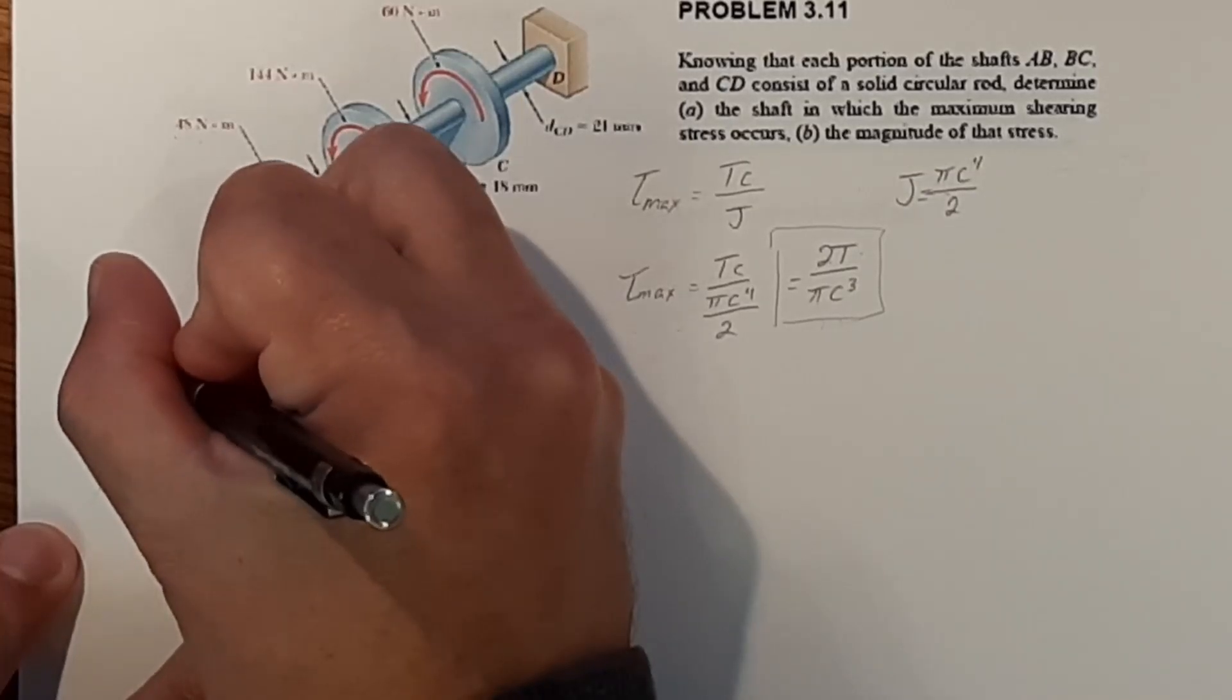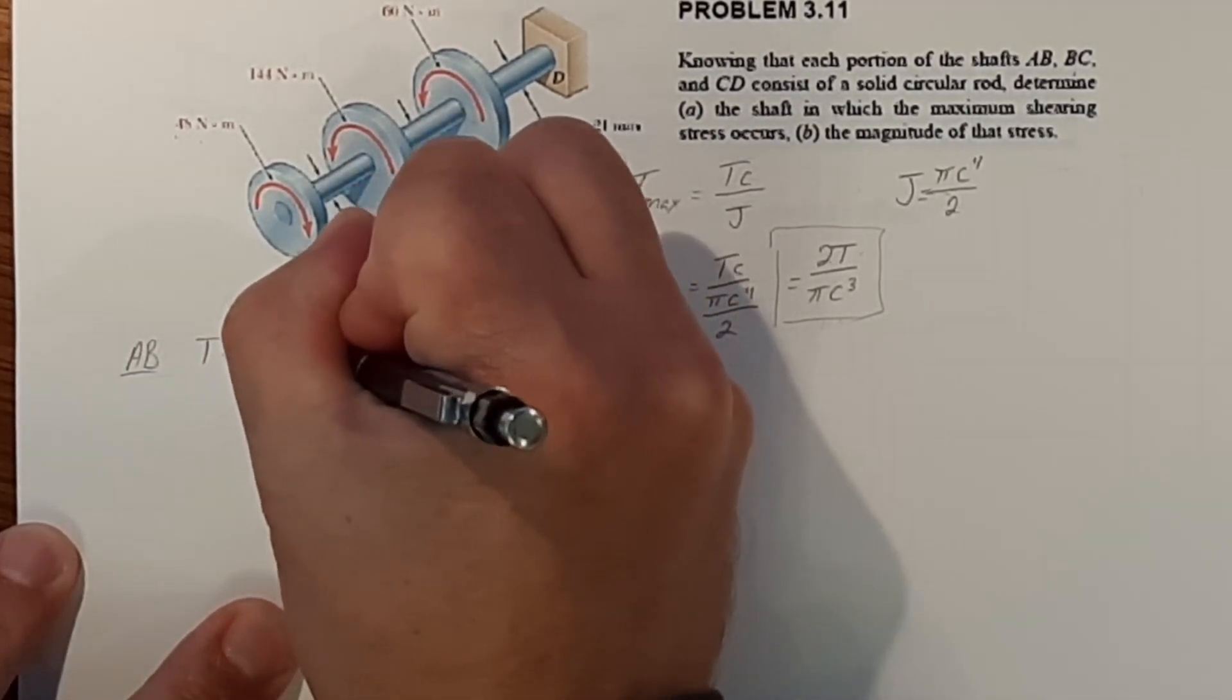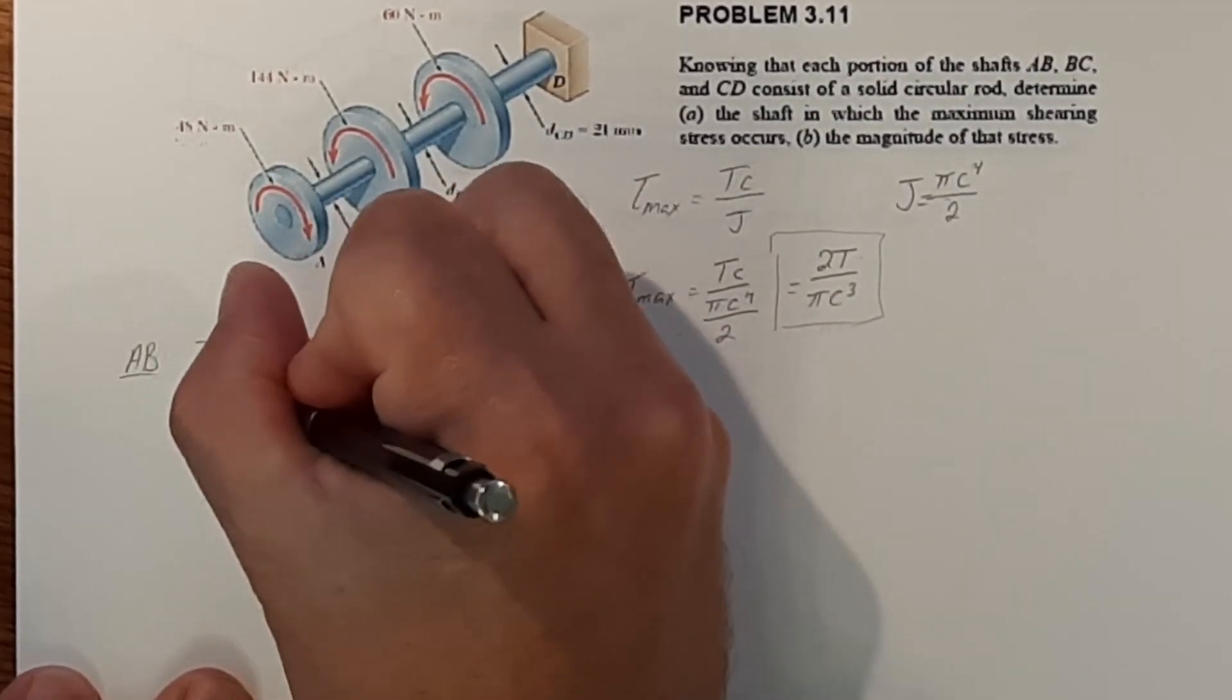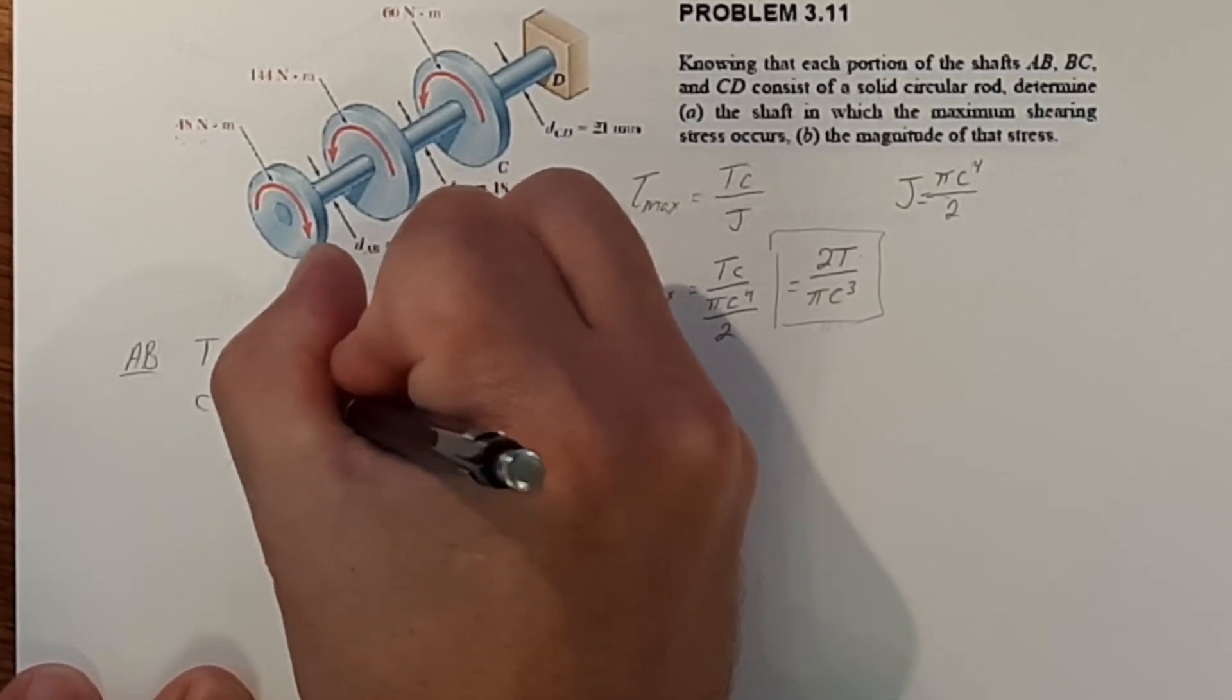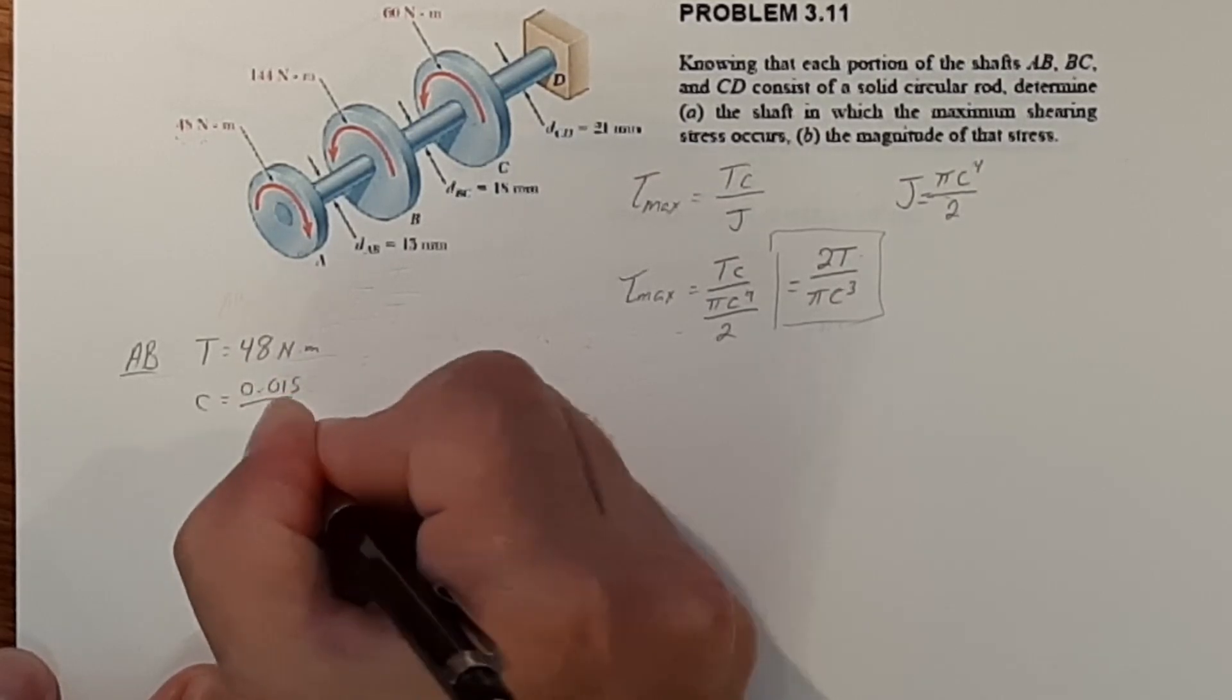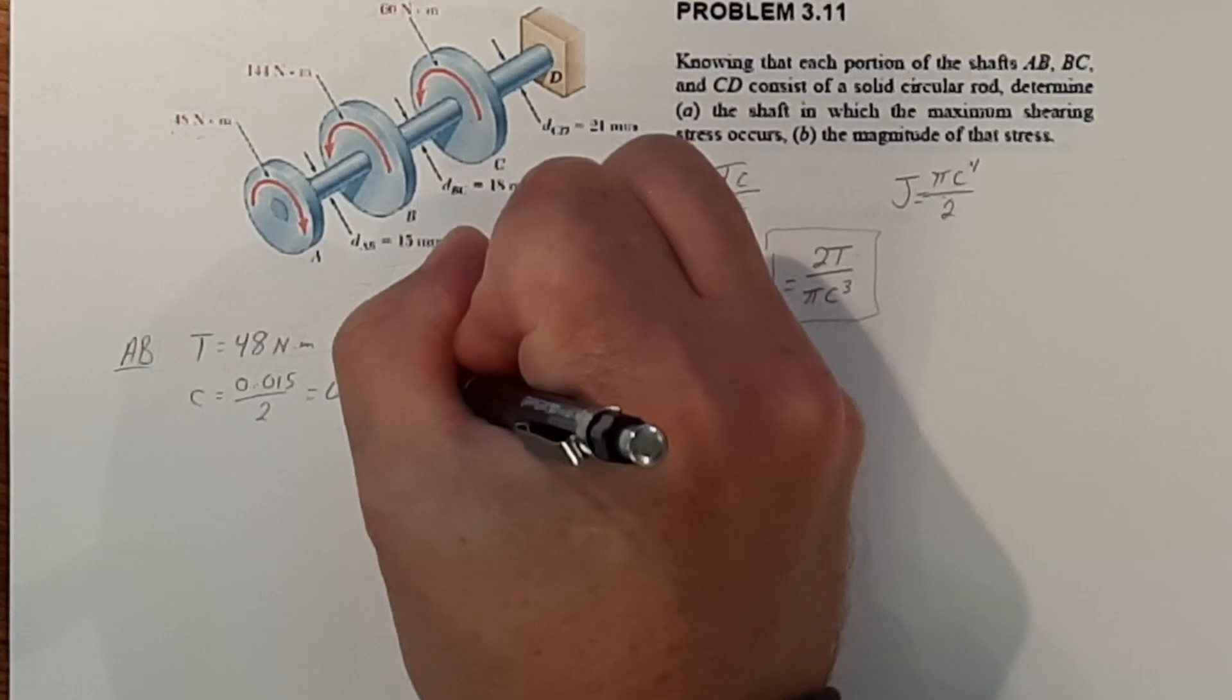For AB we know the torque is equal to 48 newton meters. It says right here on the diagram C is 15 millimeters so converting that to meters we get 0.015 divided by 2 because that's the radius and that gives us 0.0075 meters.